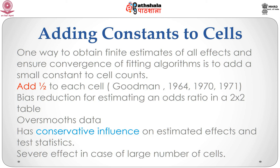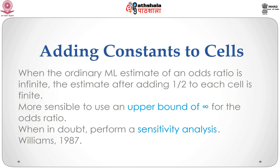The effect can be severe when there are a large number of cells. The general recommendation is that when ordinary ML estimates of an odds ratio turn out to be infinite, the estimate after adding one-half to each cell is finite. However, this is not recommended — it is more sensible to use an upper bound of infinity for the odds ratio, as we have no sample evidence to suggest the odds ratio falls below any given value. When in doubt, it is recommended to perform a sensitivity analysis, such as deleting or perturbing each influential observation using perturbation diagnostics (Williams 1987).